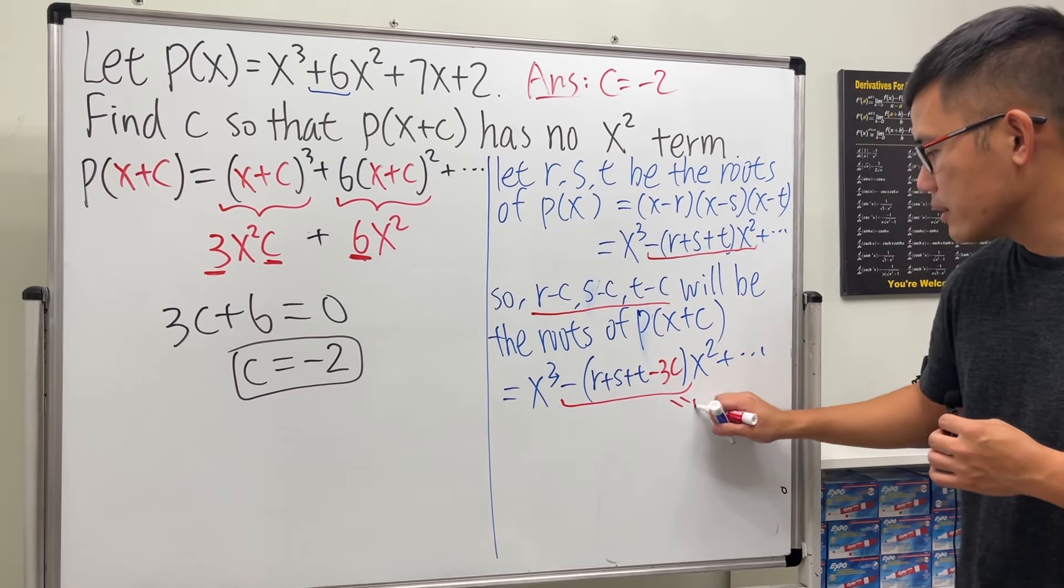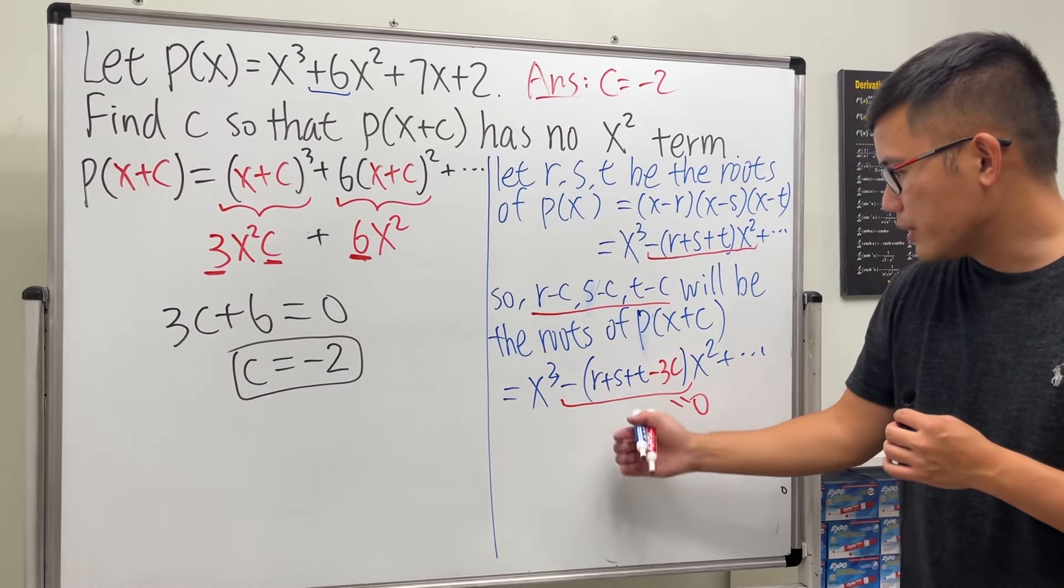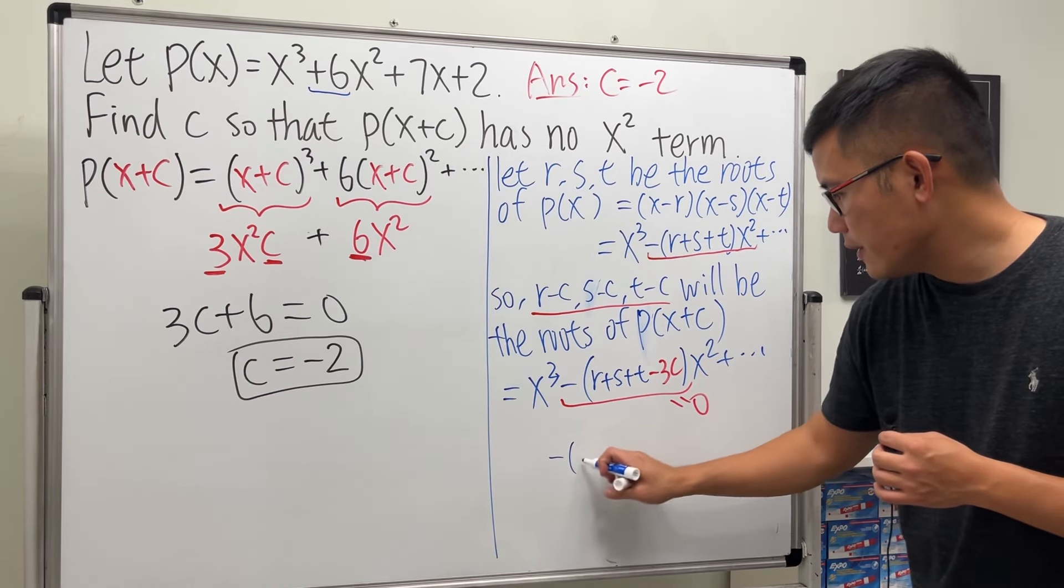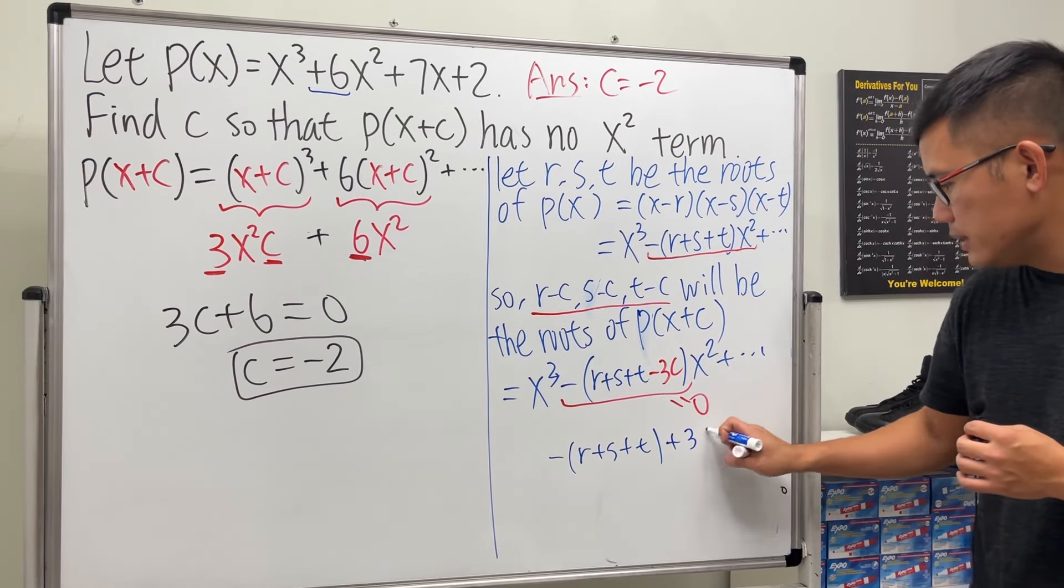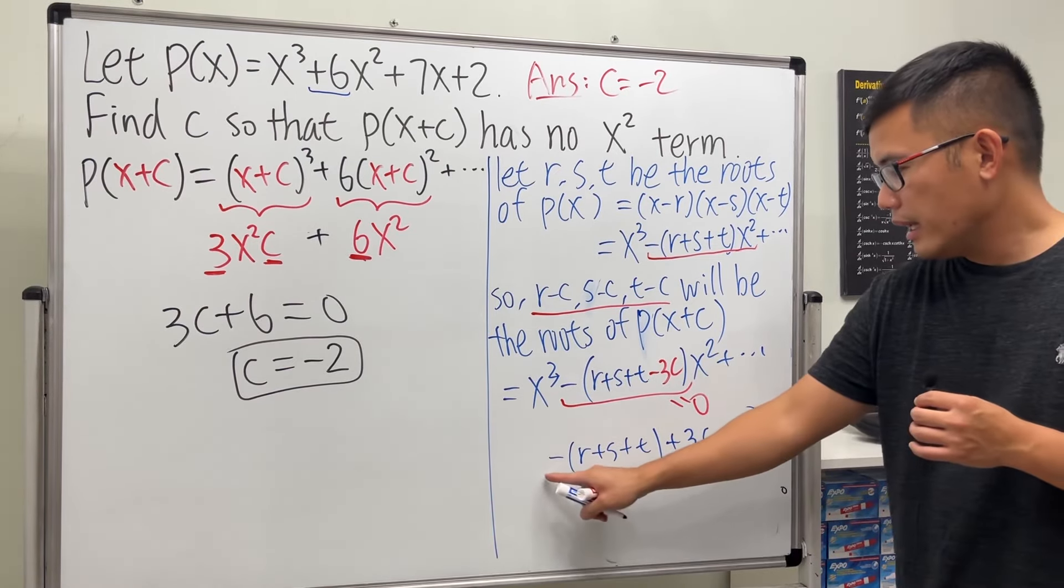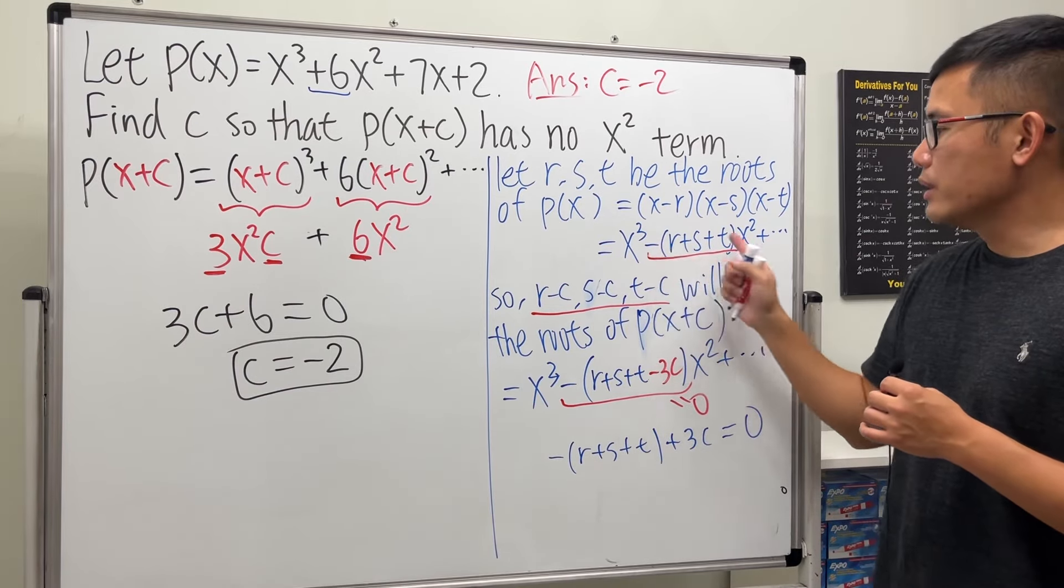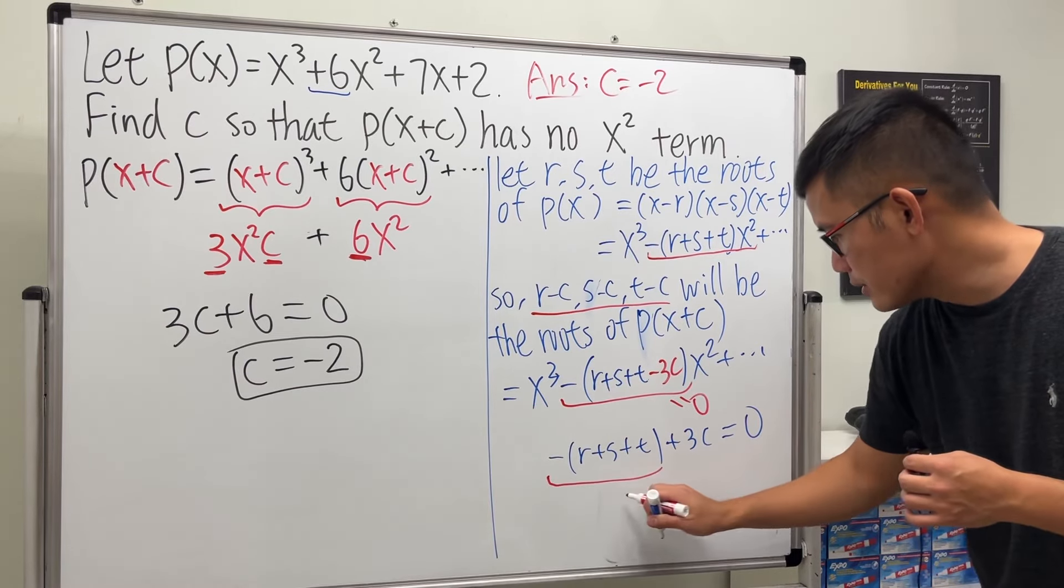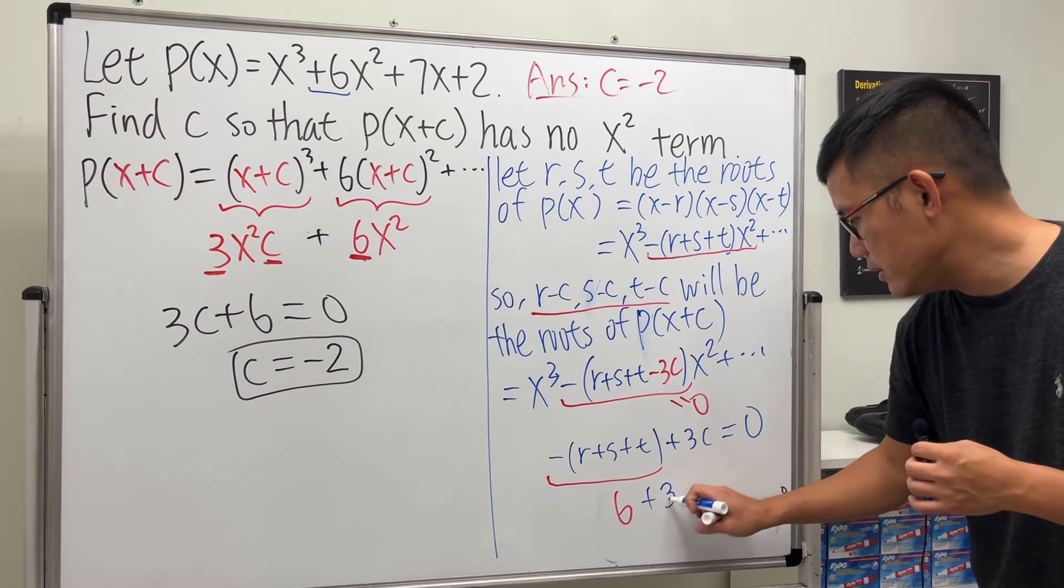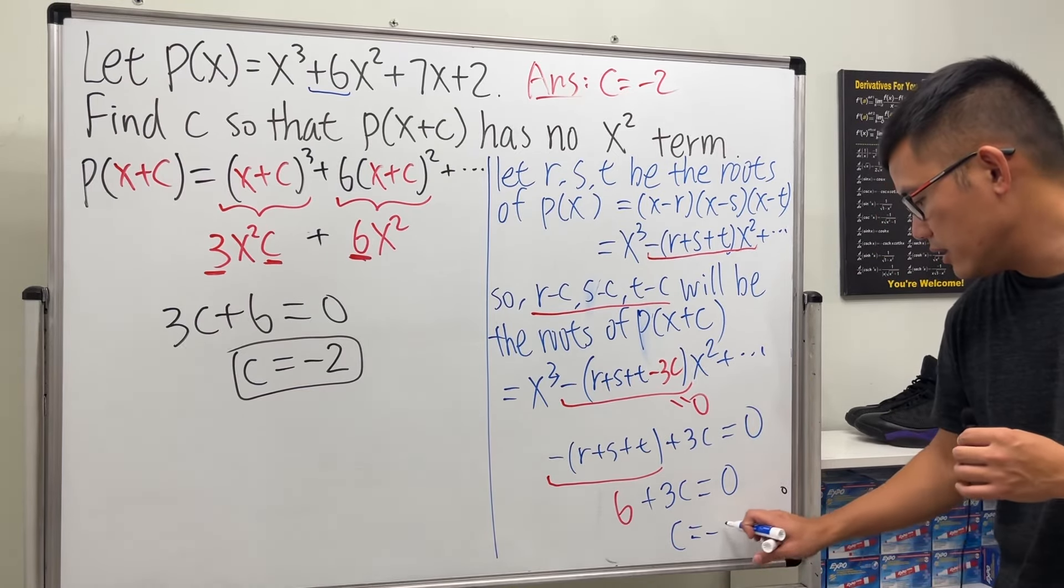We want this to be equal to zero, so we have -(r+s+t) + 3c = 0. This part, r+s+t, we can find from earlier - together they equal 6. So -6 + 3c = 0, and of course c equals -2.